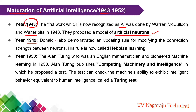In the year 1949, the scientist Hebb proposed a rule. Artificial neurons are connected among themselves, and the updating rule is to modify the connection strength between the neurons. Whatever relation exists between the neurons, the scientists modified the strength of that relation. This is called Hebbian learning.